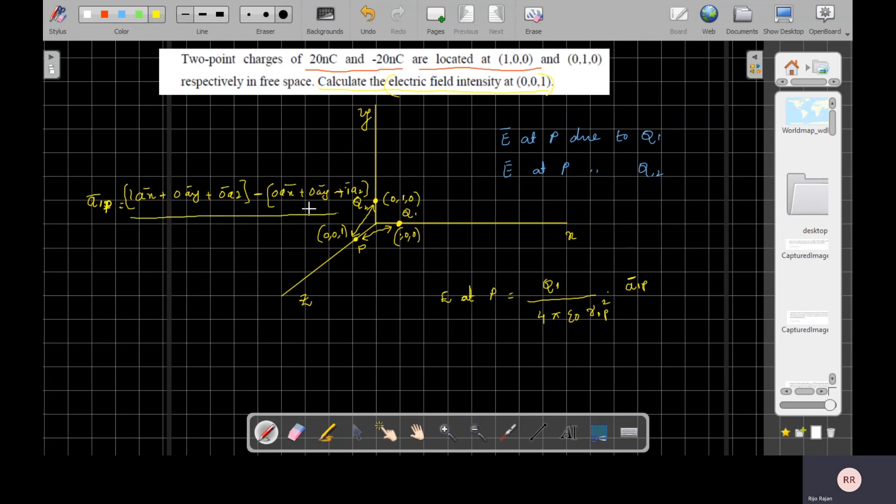Then that is all divided by the modulus of the difference. Let us take this as R1, and this as R2. So what is the modulus of this? That is the modulus of R1 minus RP. So you will get A1P.